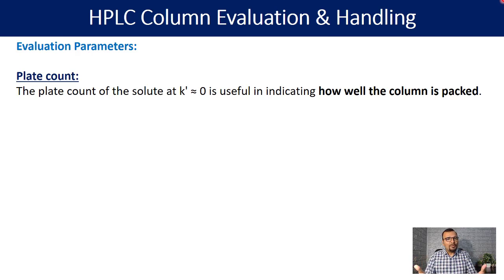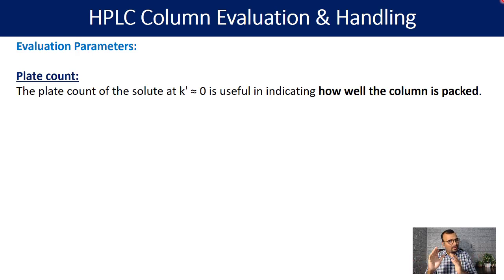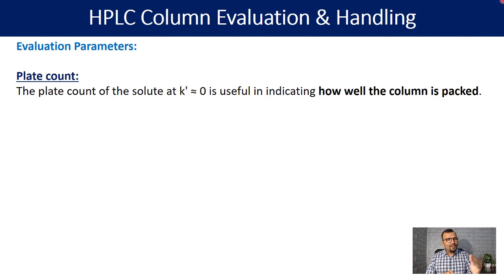When the column was new, the peak shape was very sharp. But as the column grows old, the peak shape becomes a little broad and that results in a drop in plate count. This indicates that your column packaging has started getting disturbed, and this effect has impact on the early eluting compound. Your late eluting compound may have an acceptable plate count, but the early eluting compound will get badly impacted. That is why we recommend a three-component mixture with one compound eluting early to understand your column packing health.